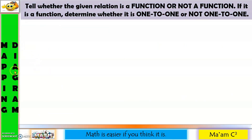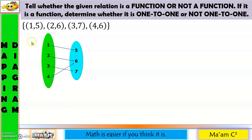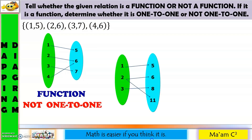Now, let us have mapping diagram. If you are not used to determining if it is a function or not by simply looking, I suggest you convert it into a set of ordered pairs. So the equivalent set of ordered pairs is (1,5), (2,6), (3,7), and (4,6). Looking at the x values, nothing was repeated. Therefore, this is a function. Looking at the y values, 6 was repeated. Therefore, this is a function but not one-to-one.